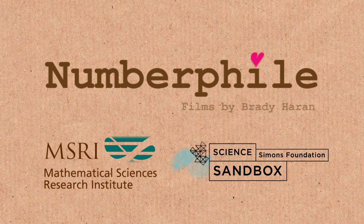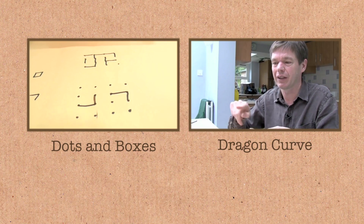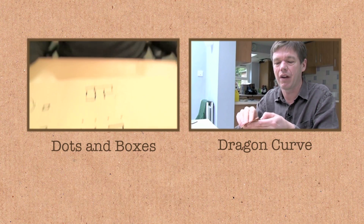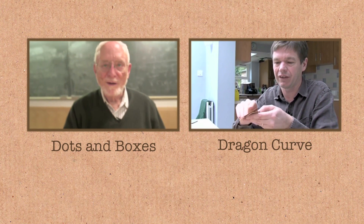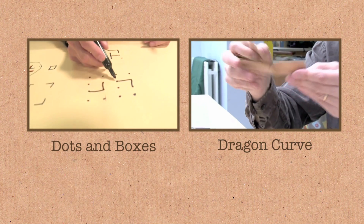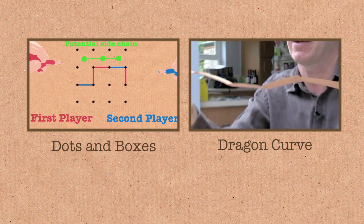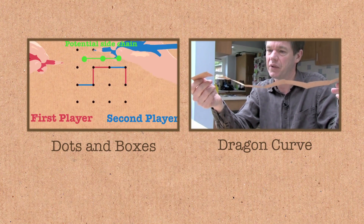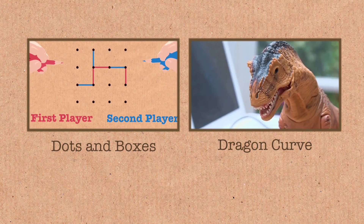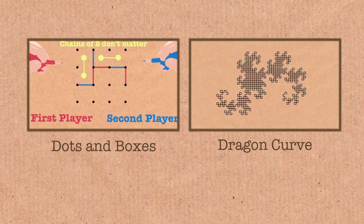What about the top and the bottom — do they count as side chains? Only if he can make a chain, but how is he going to make a chain? If he tries — watch, he tries this — but I stopped that too. Second player goes here. So now that we have two little chains, they don't matter. It's only the big chains that count.